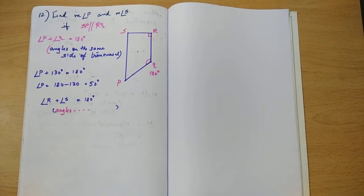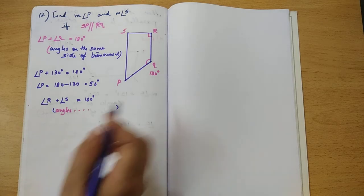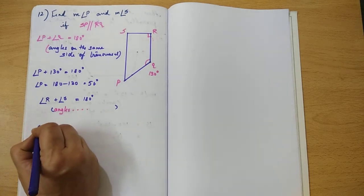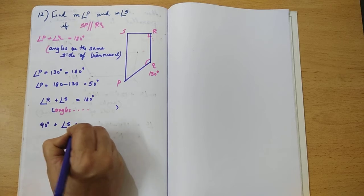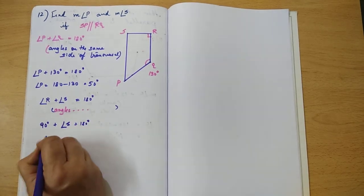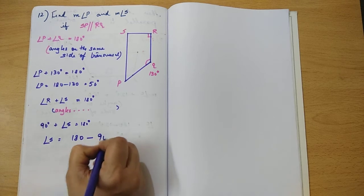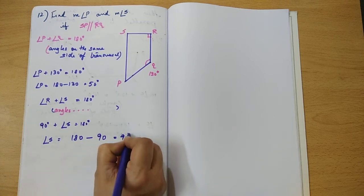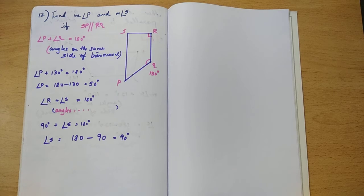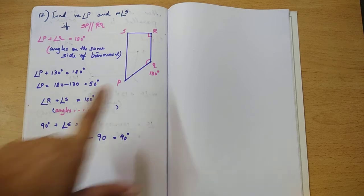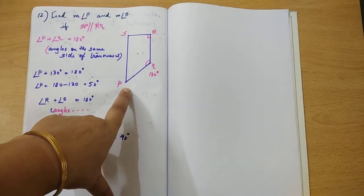So can we find angle S now? Yes. Angle R is 90 degrees. So 90 degrees plus angle S is equal to 180 degrees or angle S is equal to 180 minus 90, 90 degrees. So your sum is complete. You have found angle S is 90 degrees and angle P as 50 degrees.